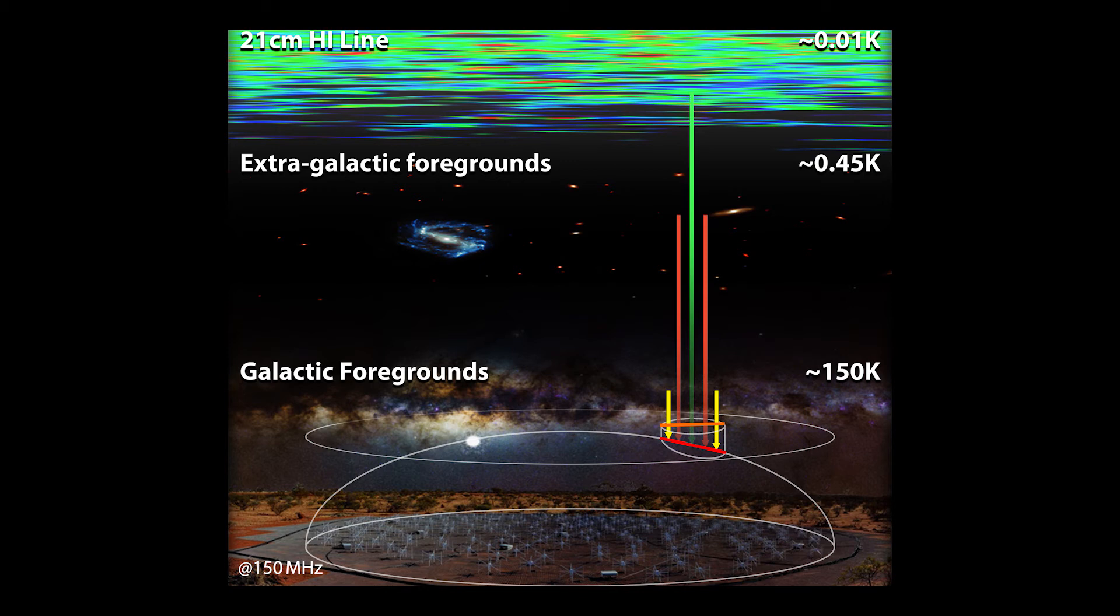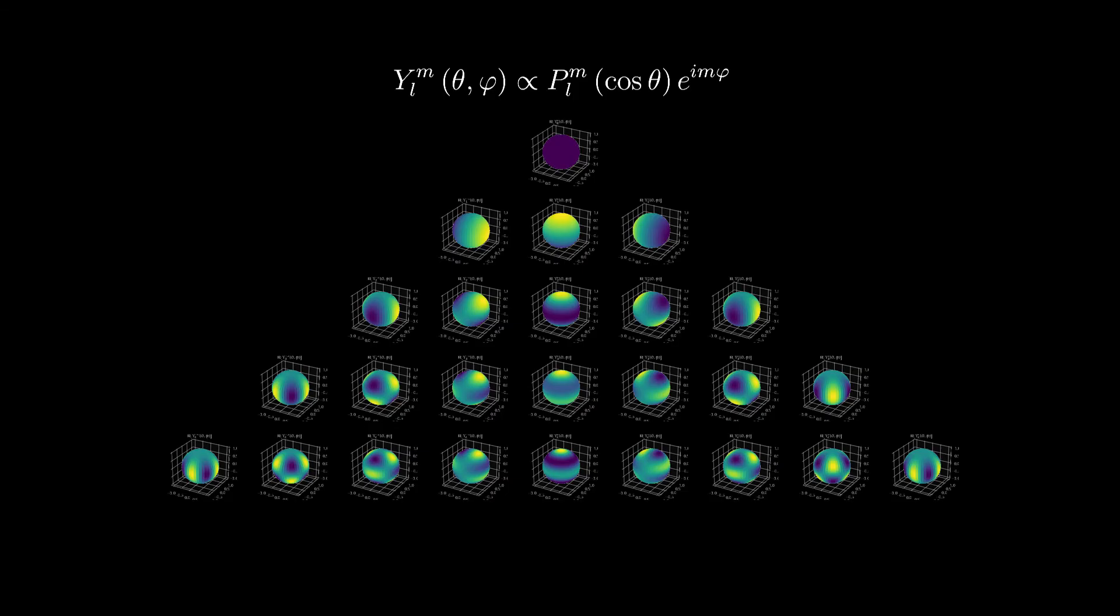Instead of assuming a flat sky, one could also use spherical harmonics to solve for the measurement equation instead. Much similar to how the Fourier series operates on the boundaries of a circle, spherical harmonic basis functions operate on the surface of a sphere.